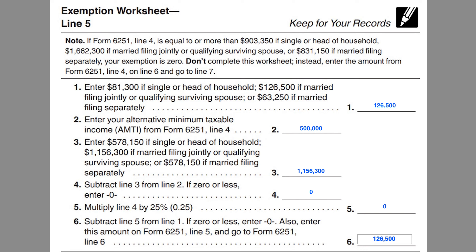If your line 4, representing the Alternative Minimum Taxable Income, exceeds these thresholds based upon your tax filing status, then you don't need to complete this worksheet. For single or head of household taxpayers, you would simply enter the amount from your line 4 onto line 6, and then go to line 7 to calculate your AMT.